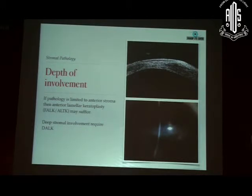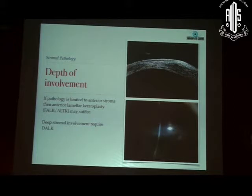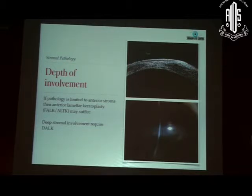Depth of involvement is also important. You have to see how deep your scar is. If your scar is going very close to Descemet's membrane, then it may be adhering to Descemet's membrane and during dissection you might end up rupturing it. If the pathology is very superficial, say within the anterior 100–150 microns, you could get away with doing a superficial or even an anterior lamellar procedure. But if it's a deeper opacity, then of course you do need to do a deep lamellar dissection down to Descemet's membrane.